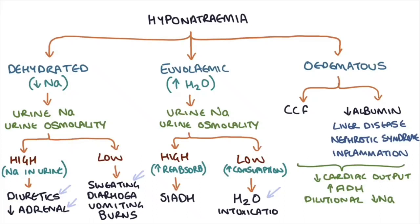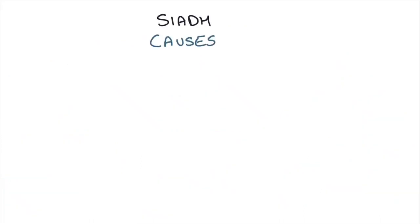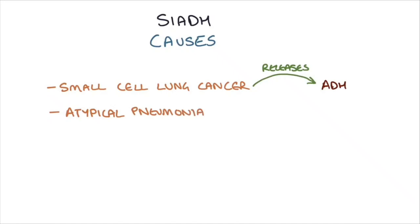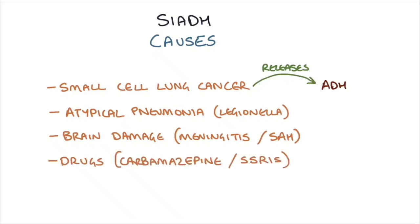A condition that I want to talk a bit more about is SIADH. There's a huge number of causes of SIADH. It's worth remembering a few that will come up in exams and being aware that there's loads of other causes. The ones to remember: small cell lung cancer, as the tumor produces and releases ADH itself; other chest conditions such as atypical pneumonia, particularly legionella pneumonia; brain damage affecting the hypothalamus, particularly due to meningitis or subarachnoid hemorrhage; and drugs such as carbamazepine and SSRIs.